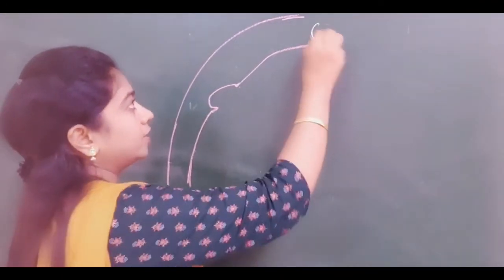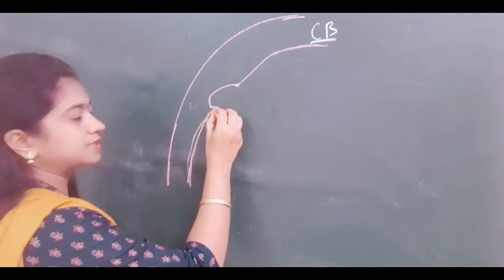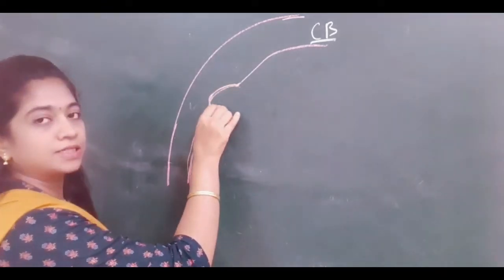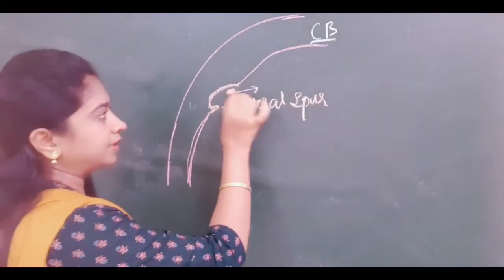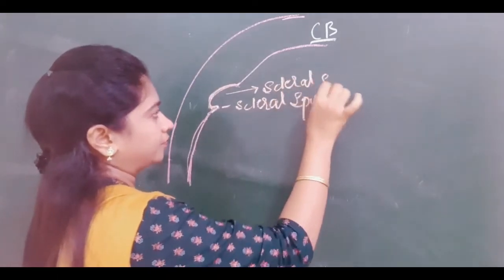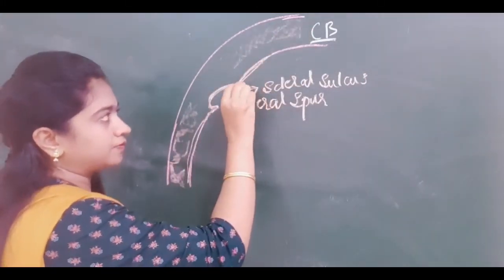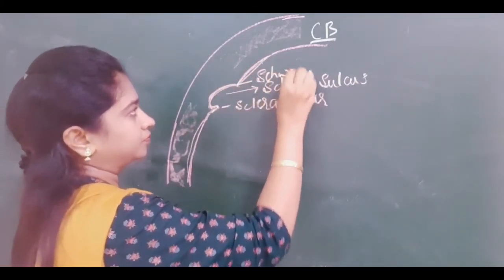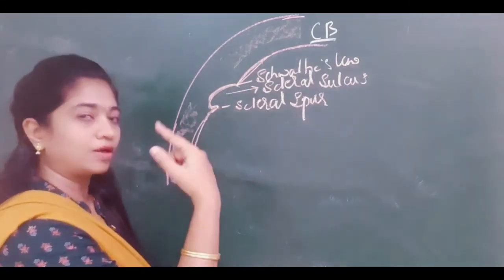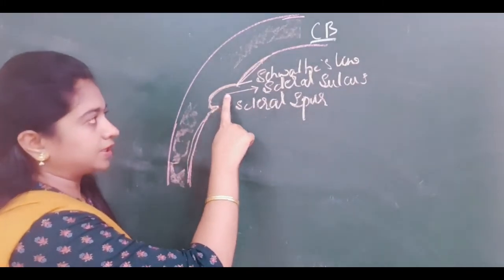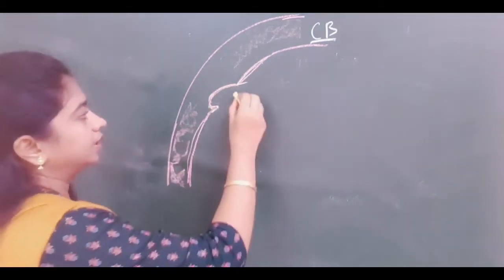Now let us discuss the anatomy of the ciliary body. This is the sclera. It has a spur-like projection here called the scleral spur — the prominent part of the sclera, present all over 360 degrees. There is a cavity-like structure called the scleral sulcus, and the prominent part in the endothelium of the cornea is called Schwalbe's line. The trabecular meshwork is present here.